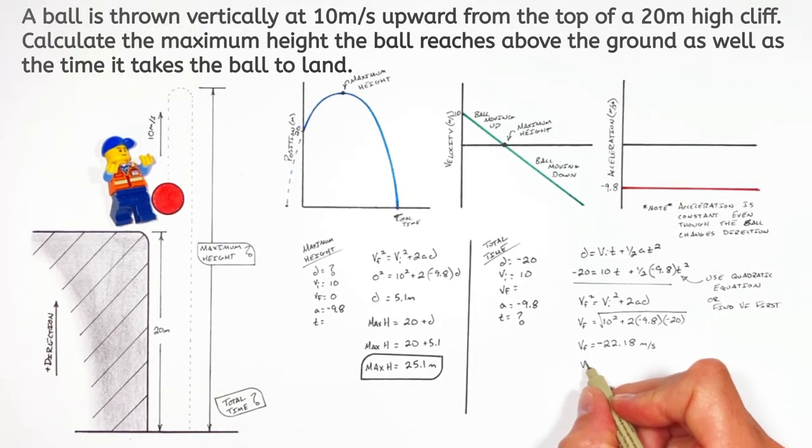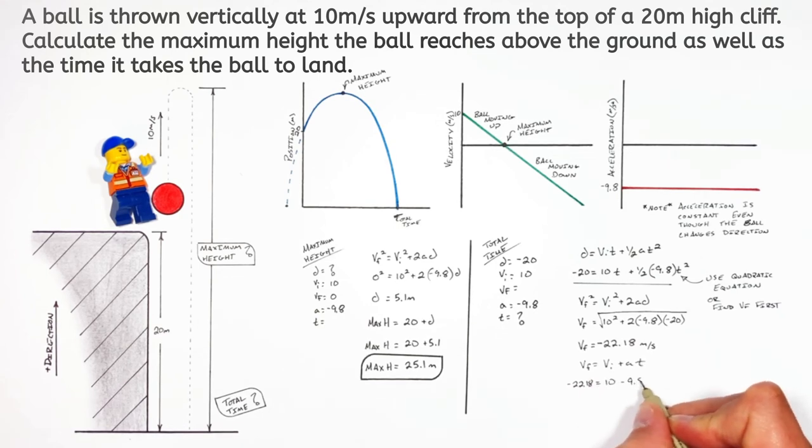So now that we know VF, we can use a simpler kinematic equation to solve for the total time the ball spends in the air. And we find it takes the ball 3.28 seconds to land.